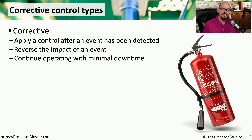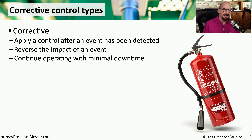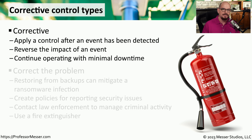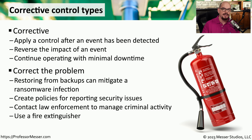If there is a notification that someone has breached a system or gained access into a certain area of your business, then you want to apply a corrective security control. A corrective security control is something that occurs after the event has been detected. This is sometimes able to reverse the impact of that particular event, or you may be able to continue operating your business with minimal downtime thanks to these corrective controls. For example, if a computer has been infected with ransomware that has encrypted everything and made data inaccessible, you can simply erase everything on that computer and restore it back to a known good system using your backups.